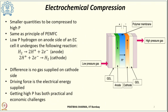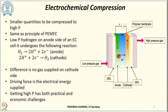The principle of operation of electrochemical compression is that a low pressure gas is allowed to pass onto the anode side. This hydrogen gas undergoes hydrogen oxidation reaction on the anode side, producing protons and electrons. The electrons migrate through the external circuit while the protons permeate through the proton conducting membrane onto the cathode side, where the hydrogen evolution reaction occurs — protons and electrons recombine to form hydrogen.